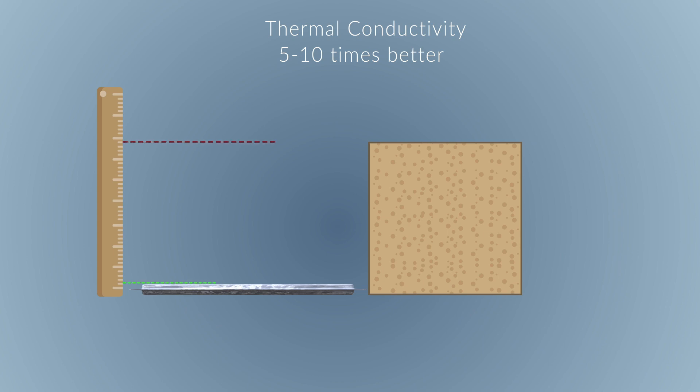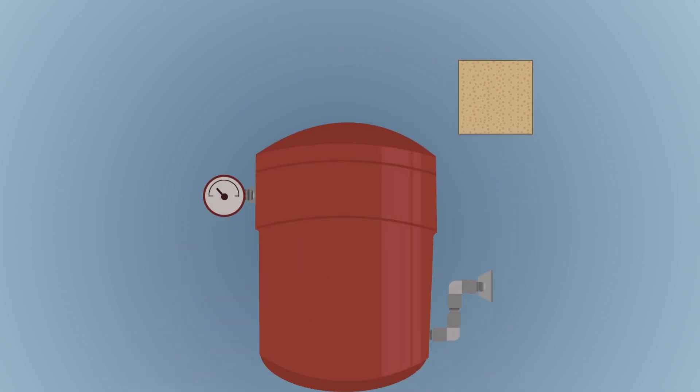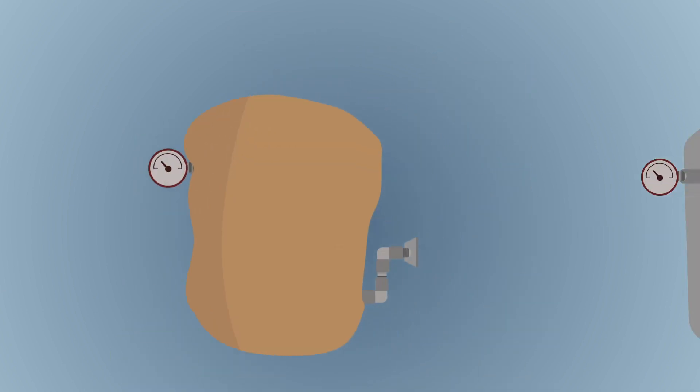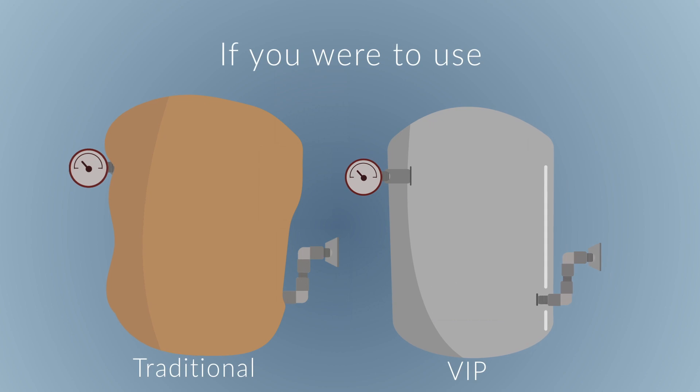In consequence, the insulation thicknesses can be reduced by a factor of 5 to 10 as well. This ends up increasing volume capacity of applications for which a lack of space for insulation thickness is an issue.